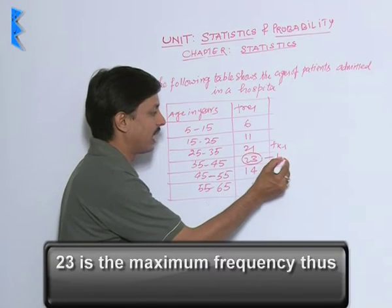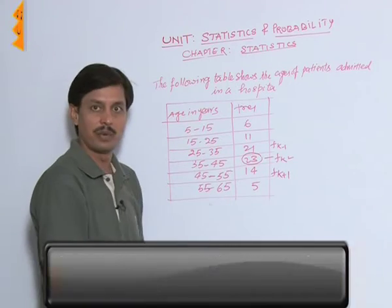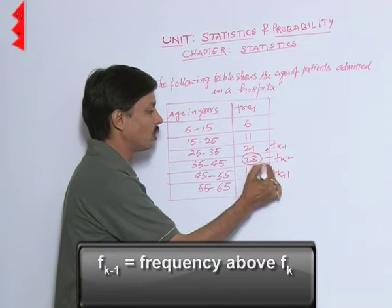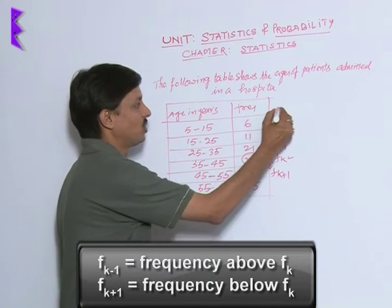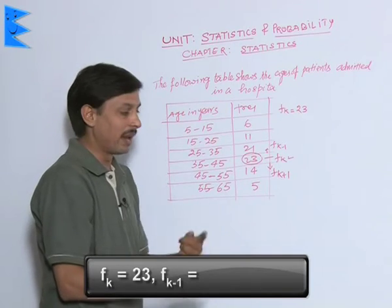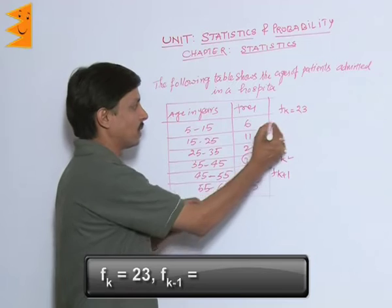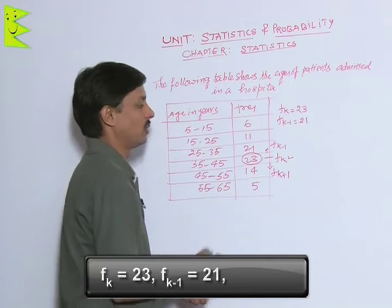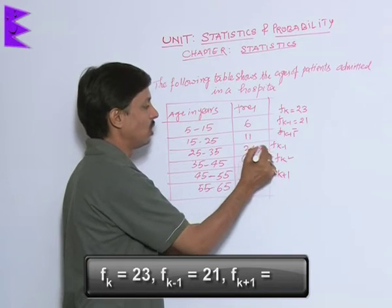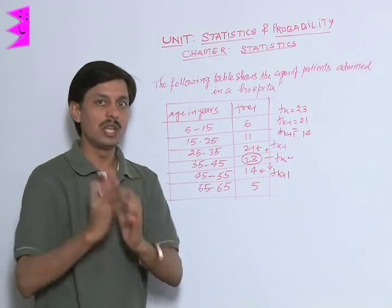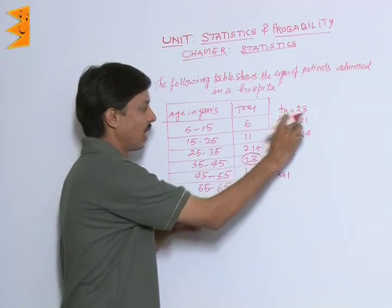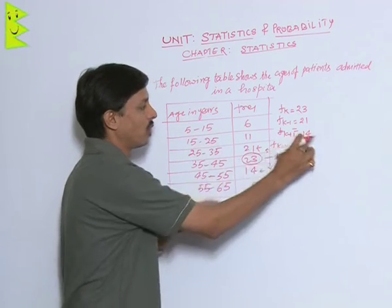This 23 is known as fk — that is, the frequency of the required interval. The frequency above it is known as fk minus 1, and the frequency below it is known as fk plus 1. So fk is 23, fk minus 1 (the previous frequency) is 21, and fk plus 1 (the next frequency) is 14.